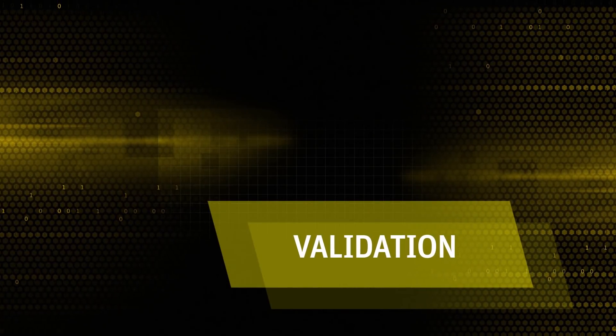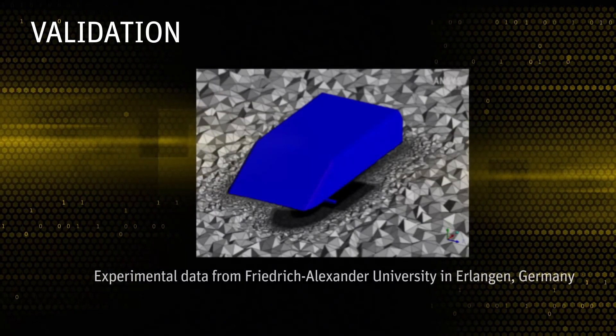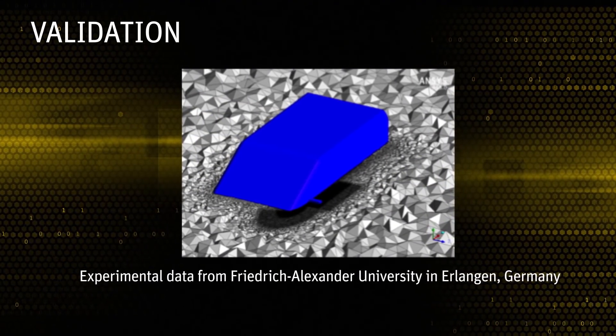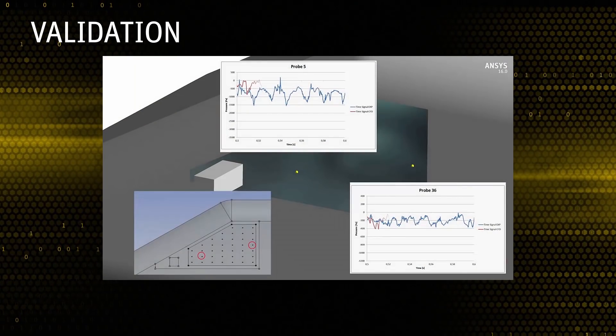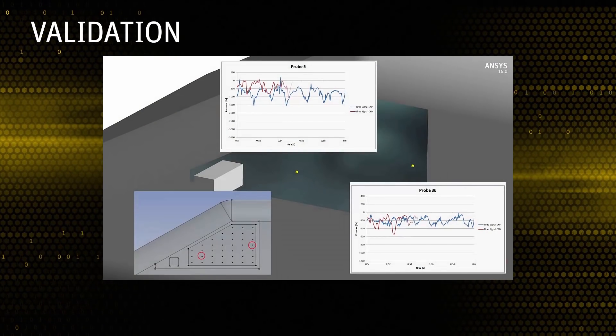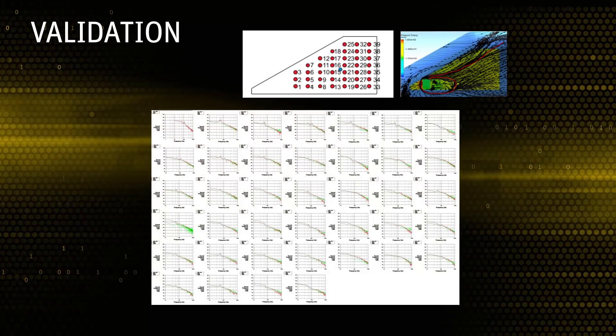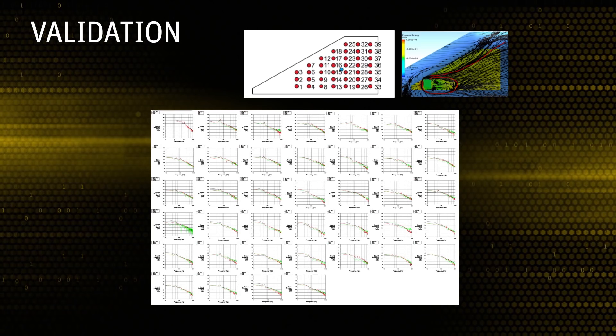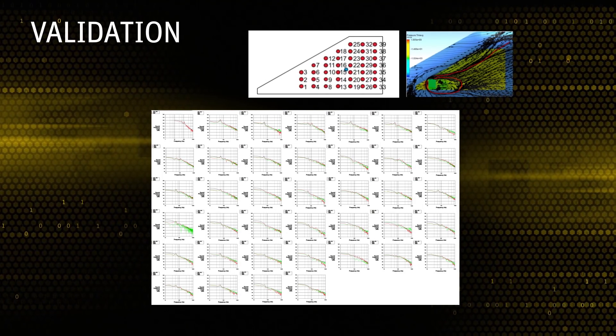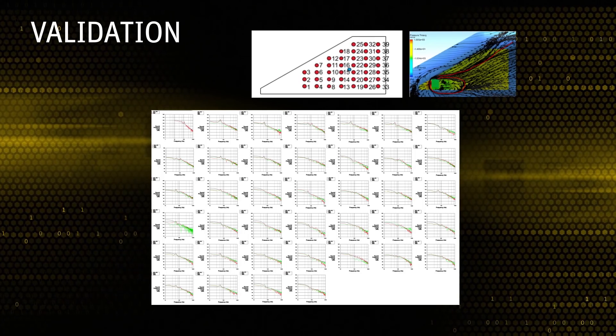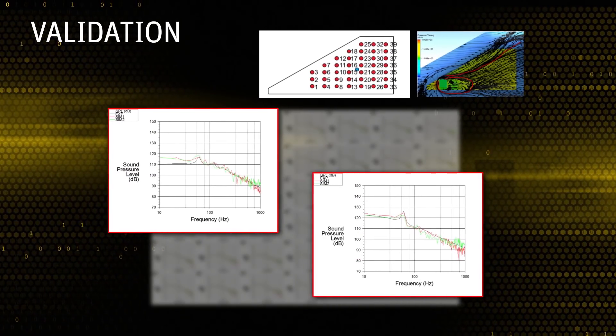Let's validate the simulation results against available experimental data. The simulation results agree closely with the time-dependent pressure data measured experimentally on the side glass. Here you see results for two out of 39 pressure probe positions. The flow pressure spectra at the remaining 37 probe positions are also in close agreement with corresponding experimental data. The comparison has been done for two different meshes, representing different resolutions and topologies.